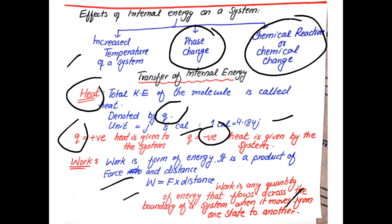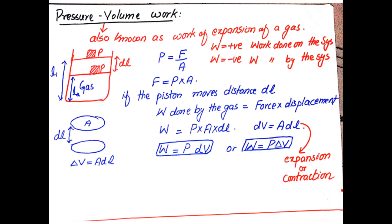Work is a form of energy. It is the product of force and distance, so W = F × d. Work can also be defined as any quantity of energy that flows across the boundary of the system when it moves from one state to another.